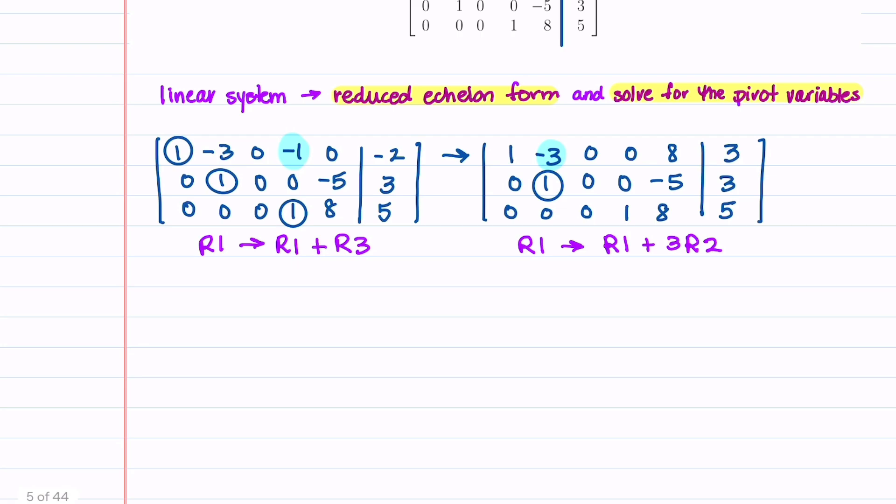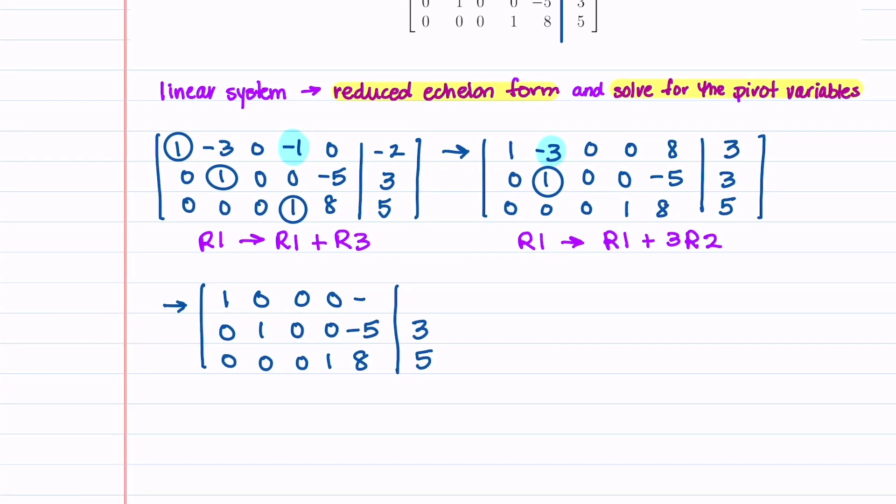Give ourselves a little bit more space here. All we have to do now is we just have to change our top row. So let's go ahead and let's write down our bottom row first. And then we'll write down our second row. And then lastly, we're going to change our top row. We're going to multiply row two by three and add it to our top row. So we get a one, zero, zero, zero. We have a minus 15 plus eight gives us a minus seven. And then a three times three is nine plus three gives us a 12.